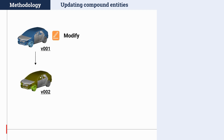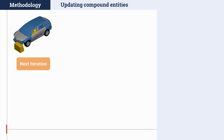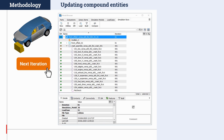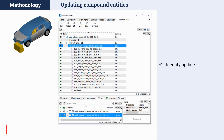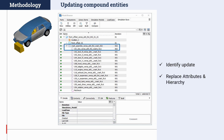New functionality is now available for the update of compound entities when creating new run iterations. Take the use case where some modifications are performed on one or more components of a model and a new version is saved in DM. When the next iteration action is performed for an existing simulation run, it is now possible to replace the contained simulation model or load case with an update from the DM tab of the model browser. The new function will update both the attributes and the hierarchy of the selected compound entity. The only precondition is that the simulation model or load case to be updated are in an unloaded state.